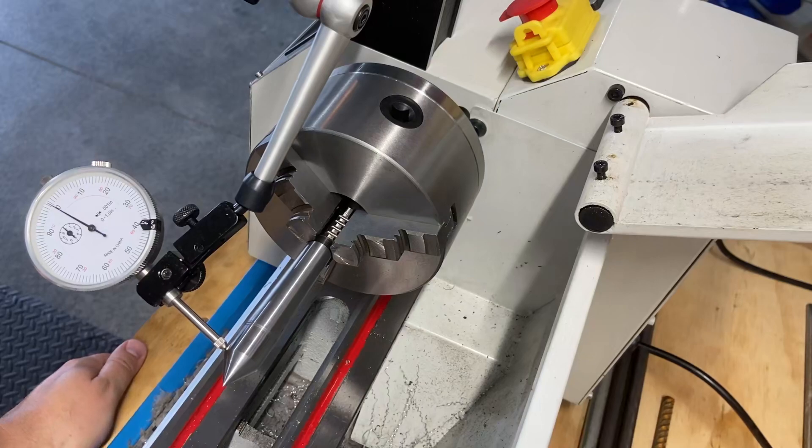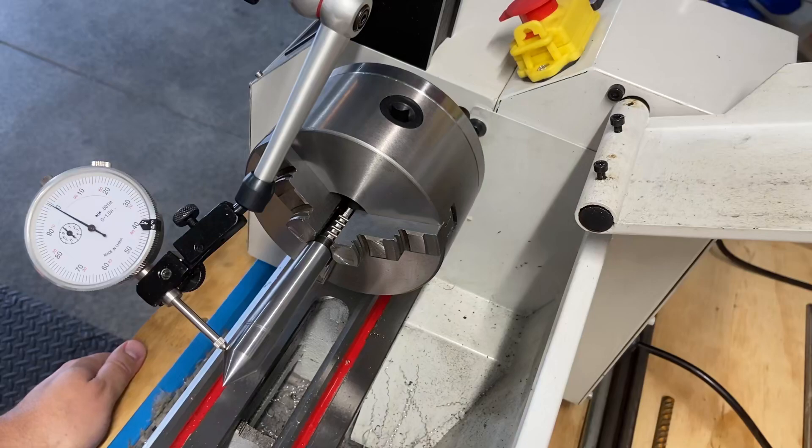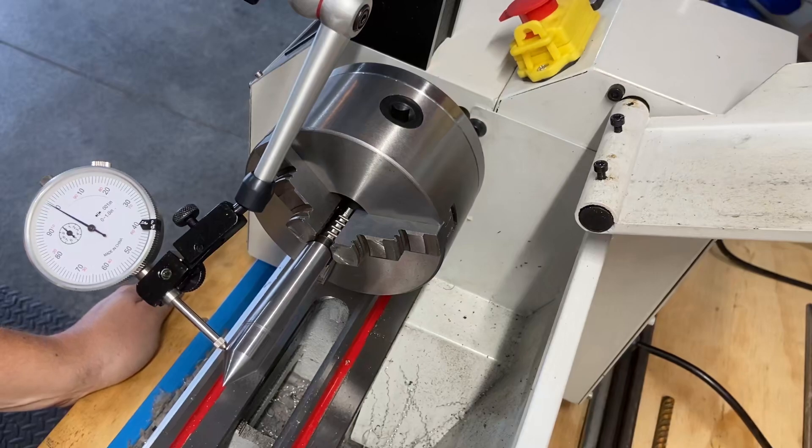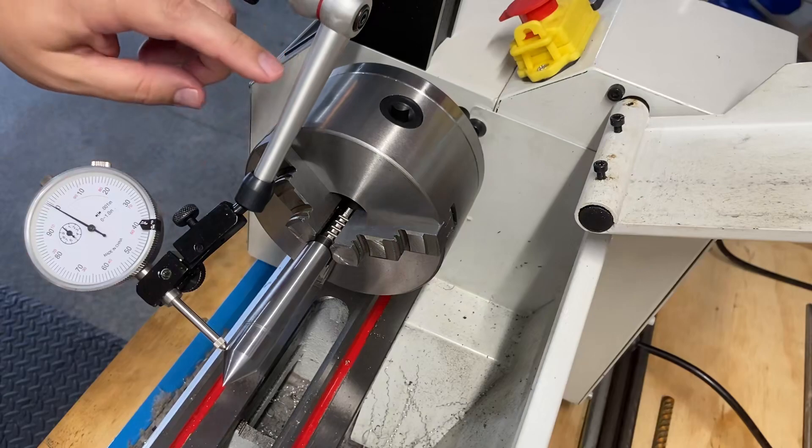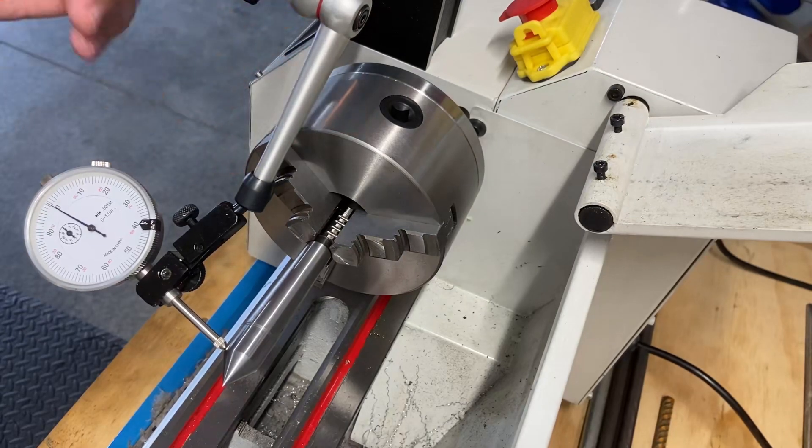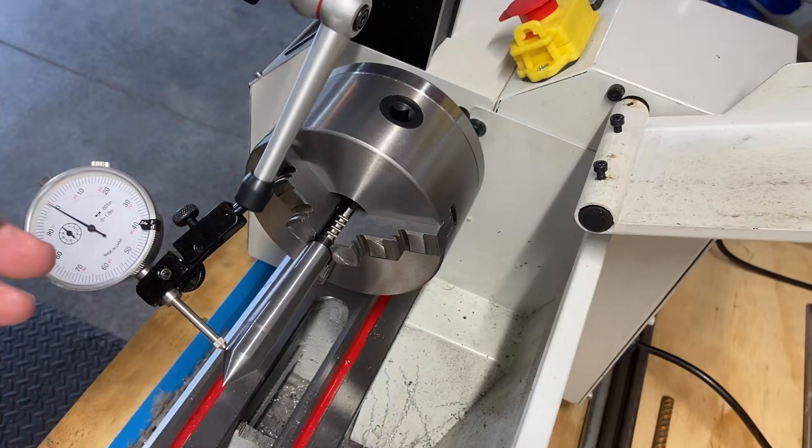I released the video on how I centered the tailstock and it probably wasn't the best way to do it. I used a shim, fuddled around with the grub screws, went back and forth. In the end, I centered it to the chuck as the chuck was mounted. I just mounted the chuck, didn't do anything to the chuck.